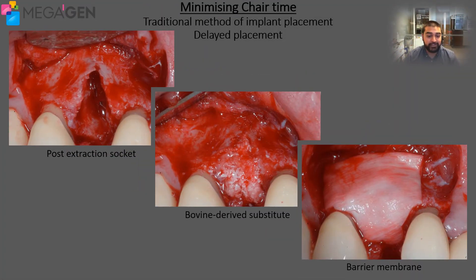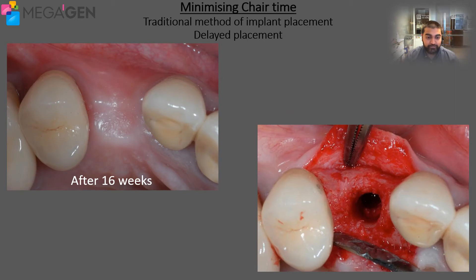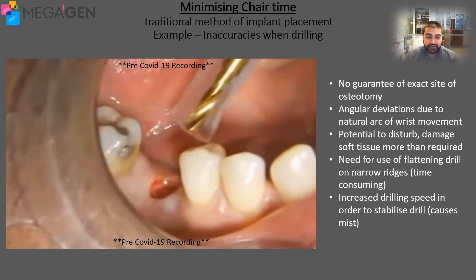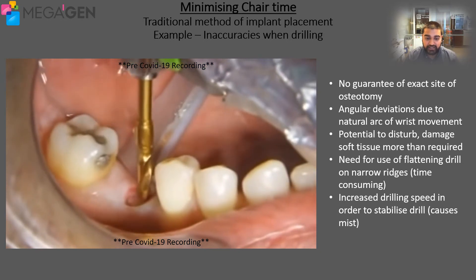I'd like to first start by comparing freehand surgery with guided surgery. These images are of a delayed placement case where the dentist has removed the natural tooth, placed some bovine derived substitute and a barrier membrane in order to provide a sound healed ridge in preparation for an implant. The dentist waited 16 weeks to allow for healing prior to drilling the osteotomy. This is now the patient's second visit. Here we see a clip of the dentist performing surgery and this is where we will start to see the first differences between freehand surgery and guided surgery.